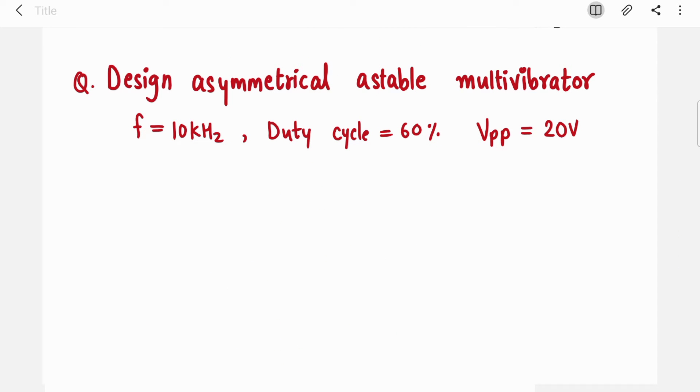Now let's jump to the question. Design asymmetrical astable multivibrator for frequency 10 kilohertz, duty cycle 60 percent, and V peak-to-peak is 20 volt. If asymmetrical word is not mentioned in the question, don't get confused. Just look at duty cycle and decide which equations to use.